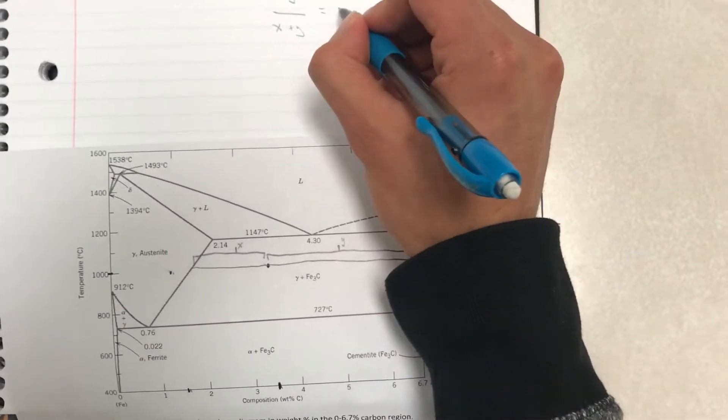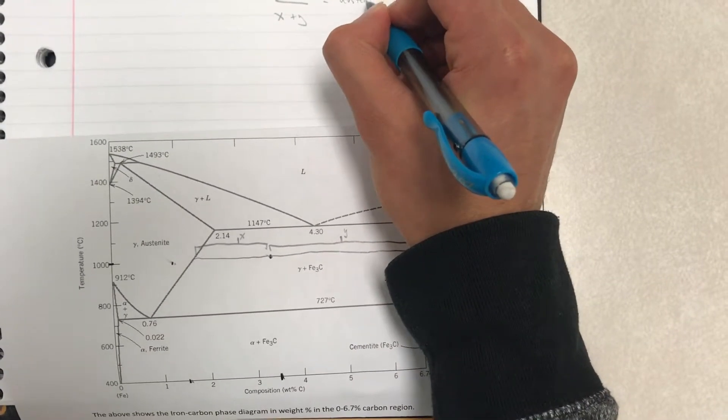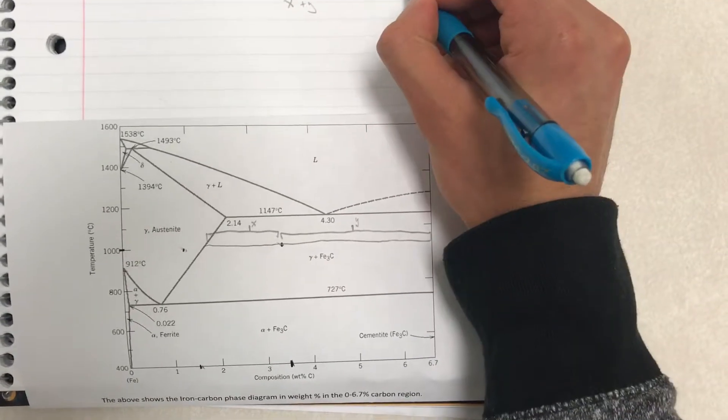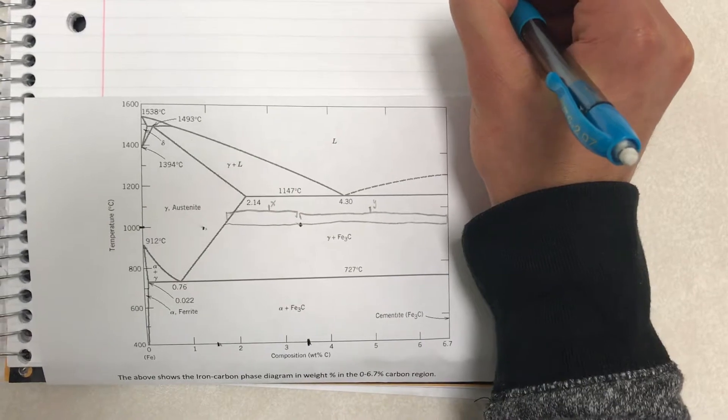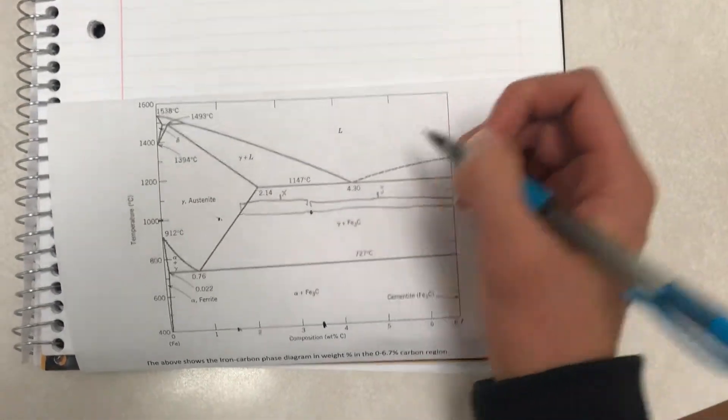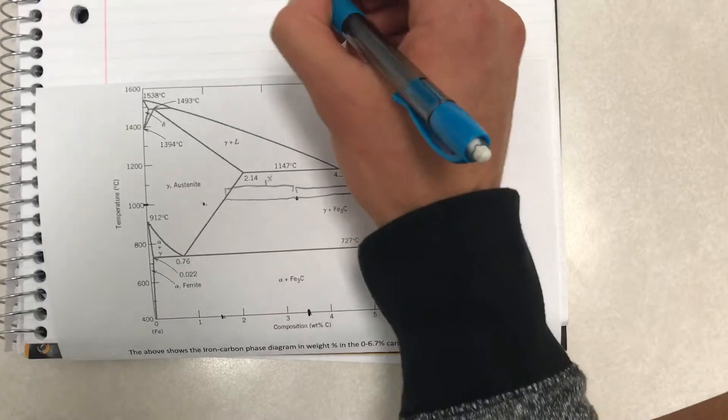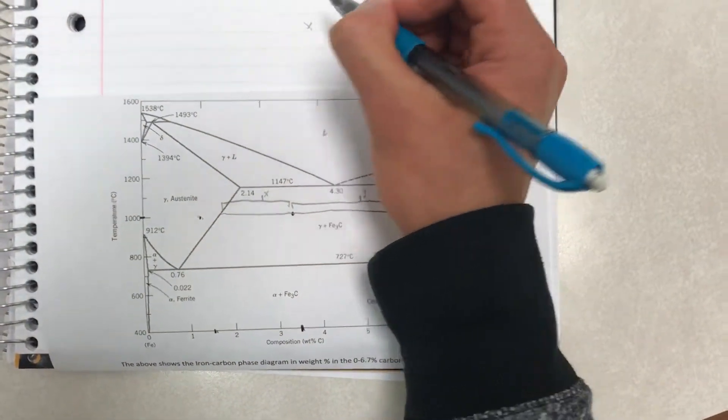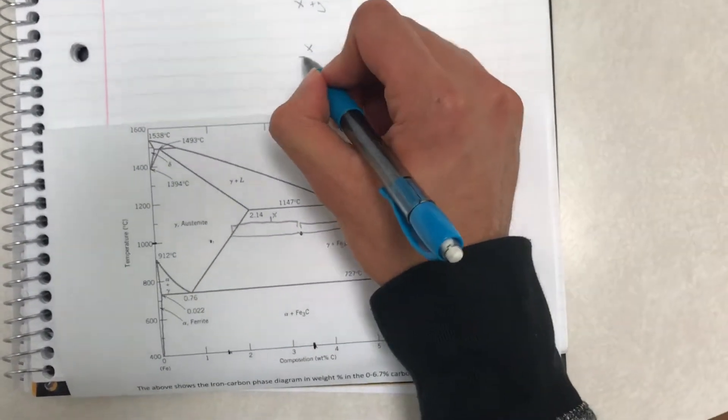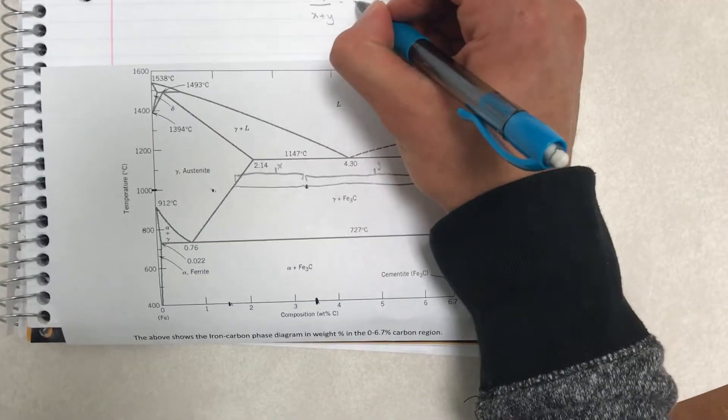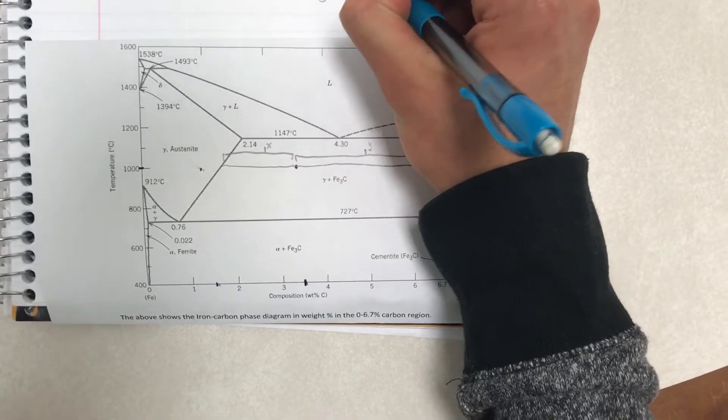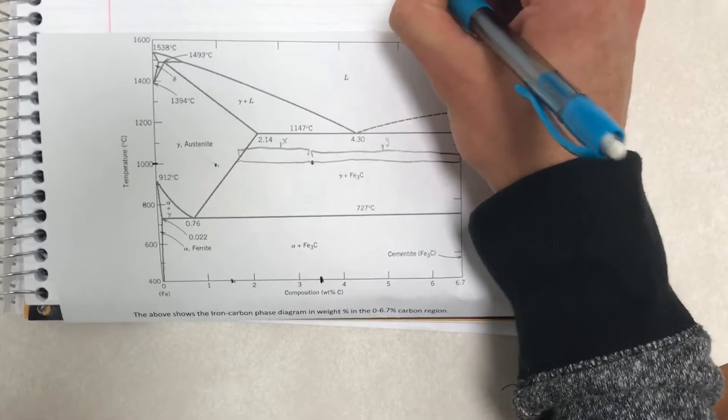I'll just write that down here: Austenite phase fraction. And similarly, if we wanted to find the phase fraction of Cementite, it would be x over x plus y, which equals Cementite phase fraction.